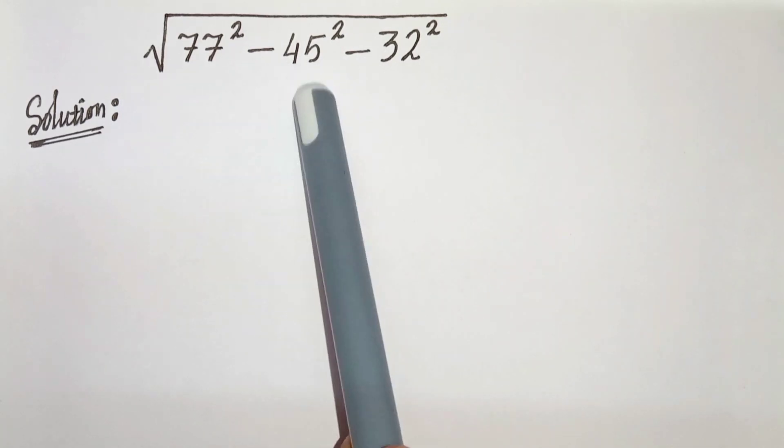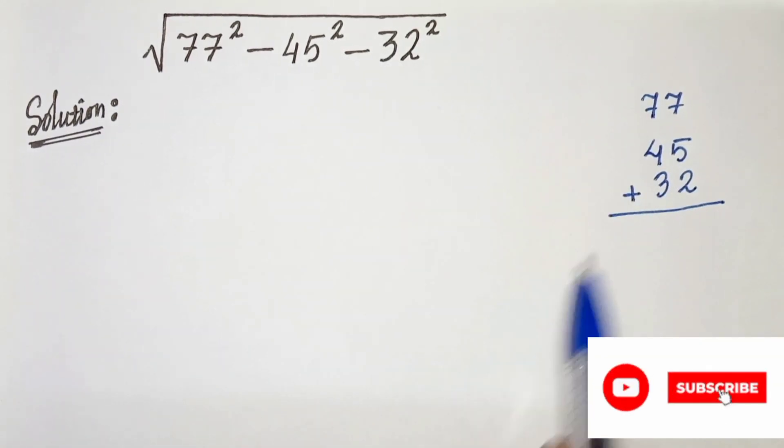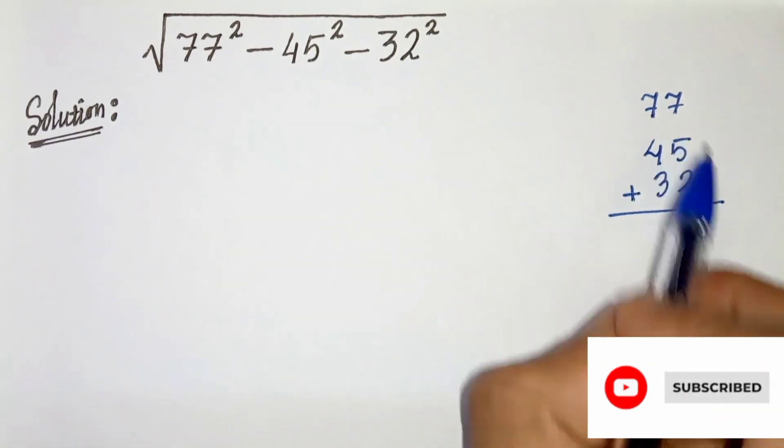So in our case we can write 77 as the sum of 45 and 32. We can write 77 as 45 plus 32, 5 plus 2 is 7, 4 plus 3 is 7.